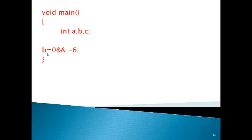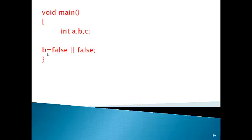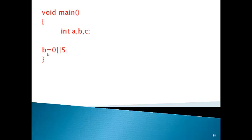Now talking about OR operator: true OR true — which of these is the answer? The answer will be true. In OR, only one condition needs to be true. False OR true is true. 4 OR 5 — both are non-zero (true), so true OR true is true. True OR false is again true. False OR true is true. False OR false is false.